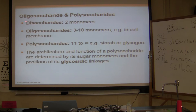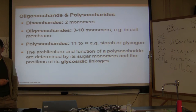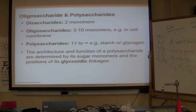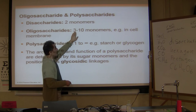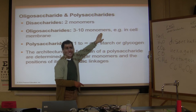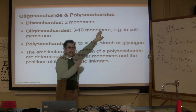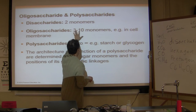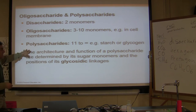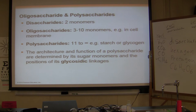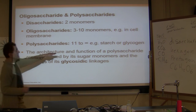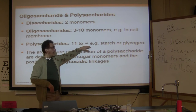Oligo means a few, so oligosaccharides are formed when between three and ten glucose or other monosaccharide molecules combine — more than two. Polysaccharides have eleven to infinity monomers. Examples include starch and glycogen. The architecture and function of polysaccharides are determined by their sugar monomers and the positions of their glycosidic linkages.